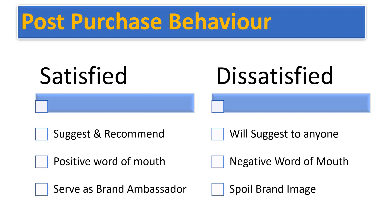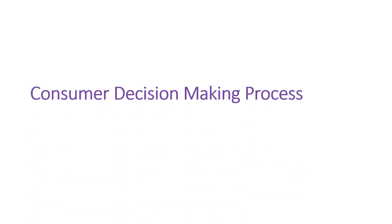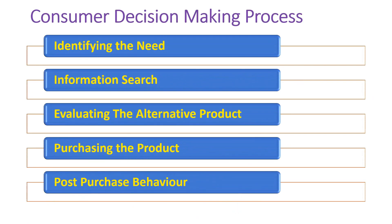To summarize, the five steps of the consumer purchase decision-making process are: identifying the need, gathering information about the product, evaluating the alternative products, purchasing the product, and post-purchase behavior. Now let us understand this concept with one simple example.